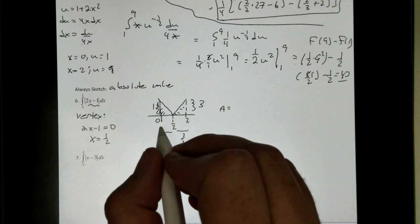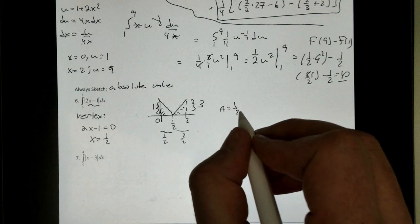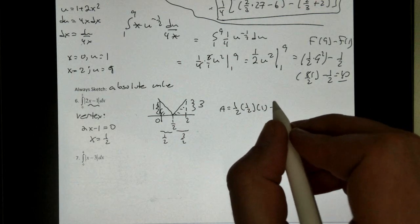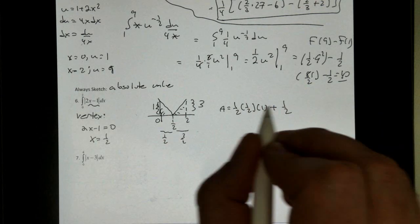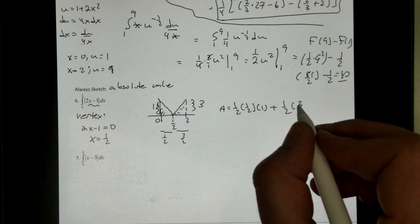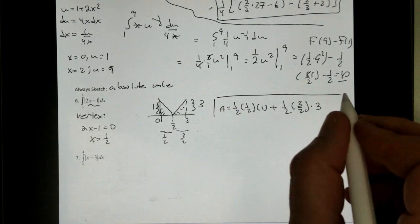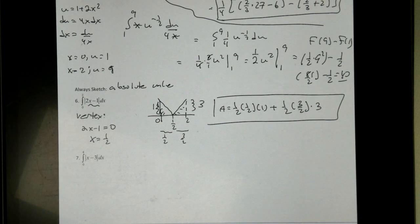So my area is 1 half, the base of the first one is 1 half, times the height, which is 1, plus 1 half the base of the second one, which is 3 halves, times this height, which is 3. Do not simplify. Just leave that alone.